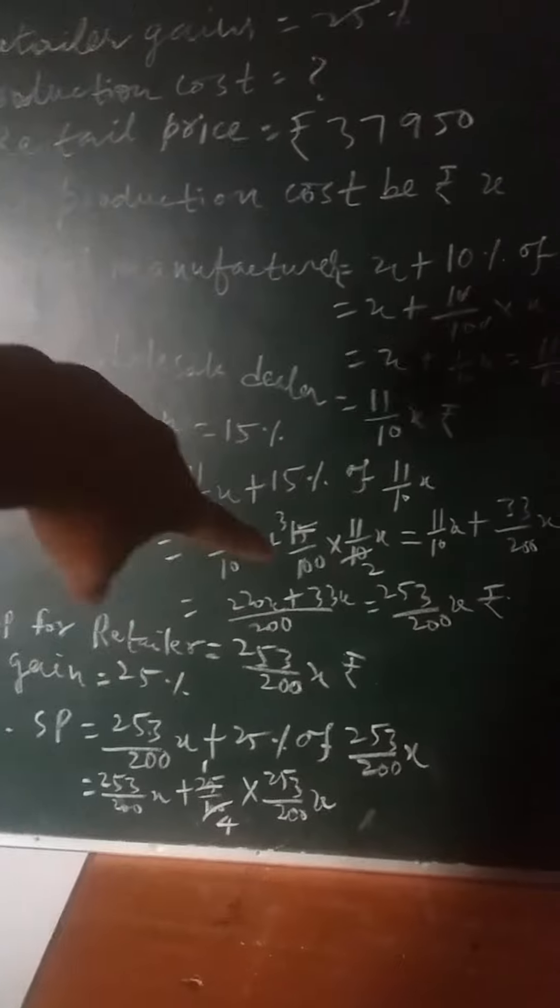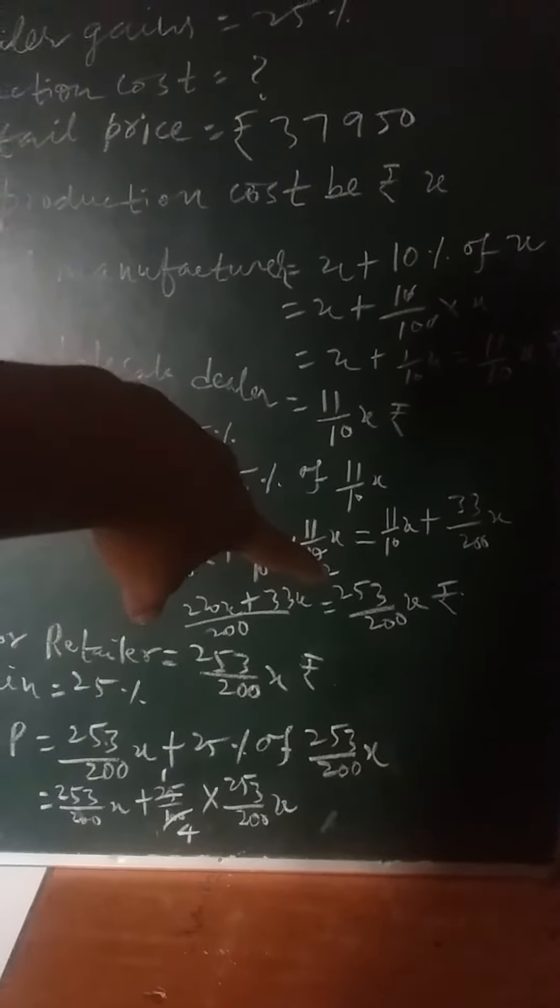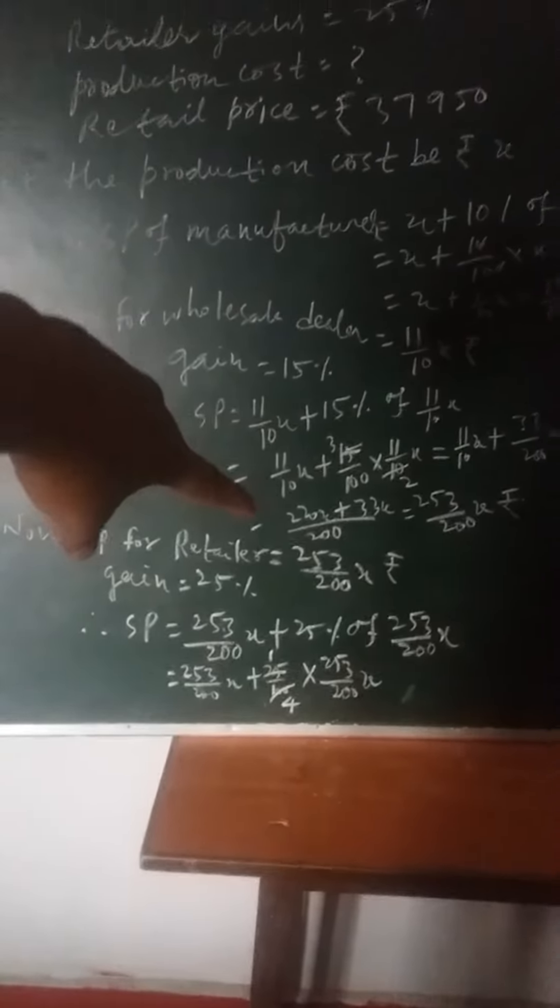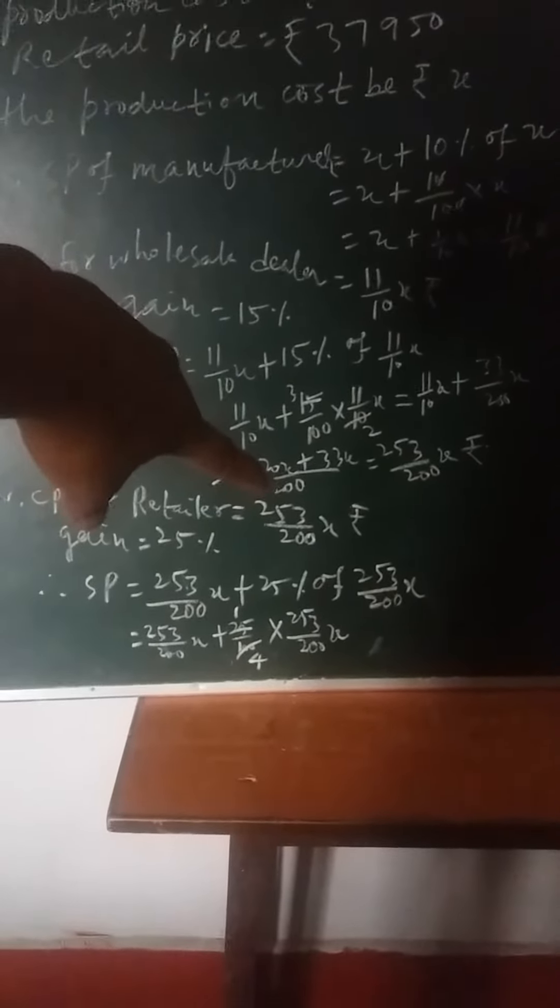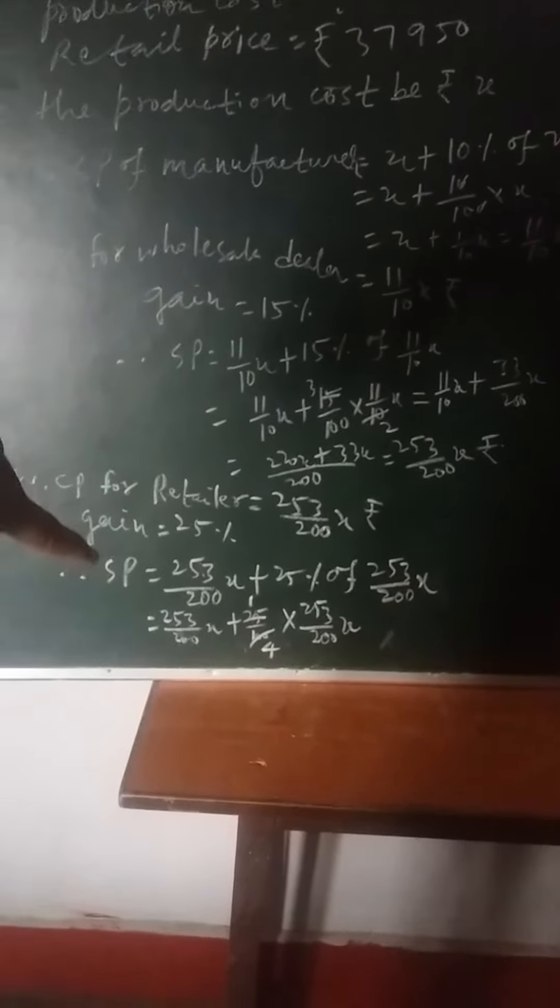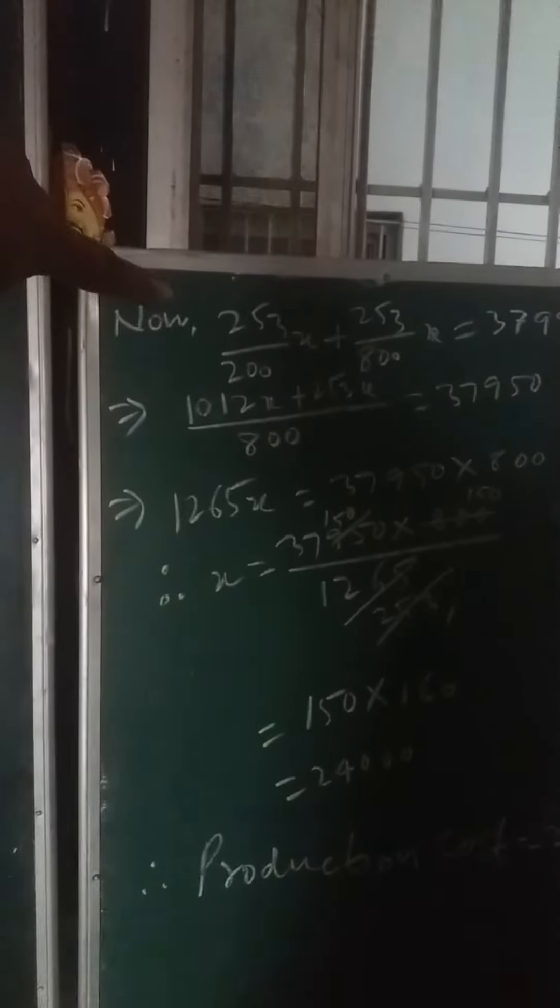Now cost price for retailer will be 253 by 200 X rupees and gain equals 25%. So selling price will be, after calculation, 253 by 200 X plus 253 by 800 X.